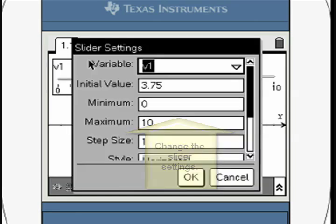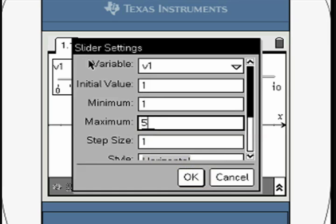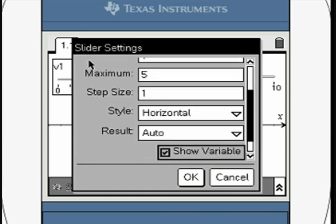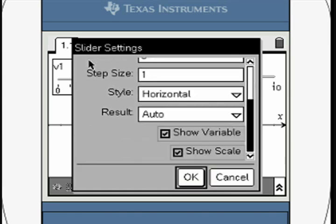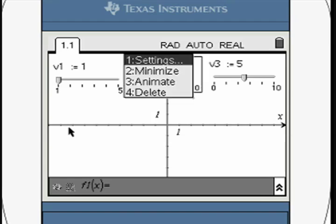Change the settings for each slider. Have the pointer hover over the slider and press Control and Menu. Change the settings as shown.